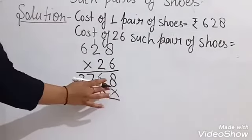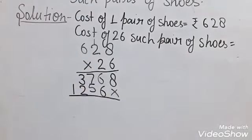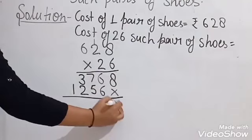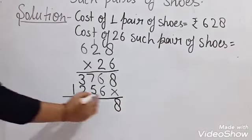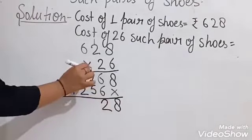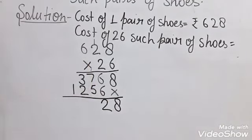Now we add it. 8, then 6 plus 6 is 12, write 2 and carry 1. 7 plus 5 is 12, plus carry 1 equals 13, write 3 and carry 1.